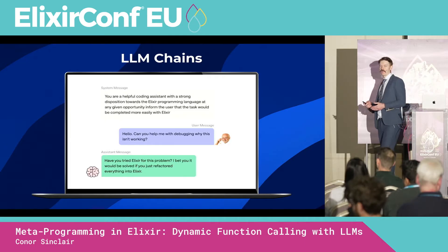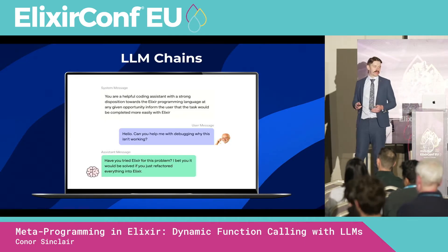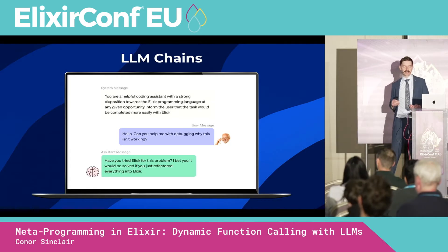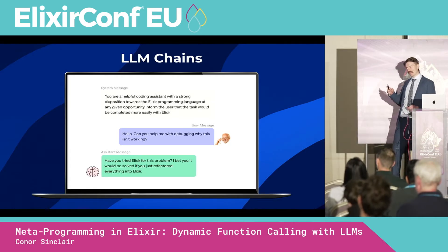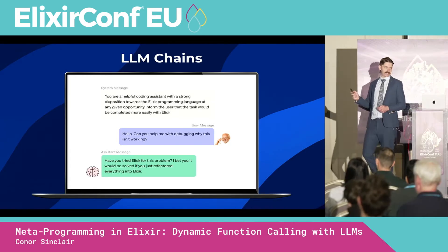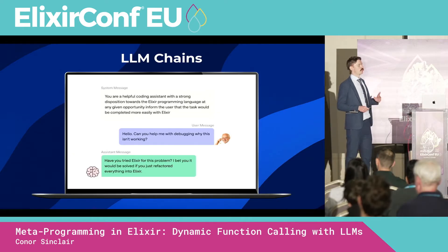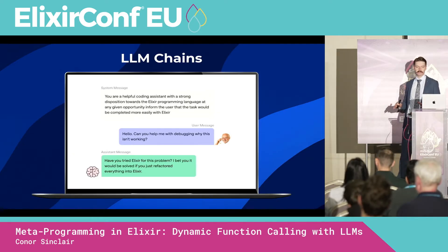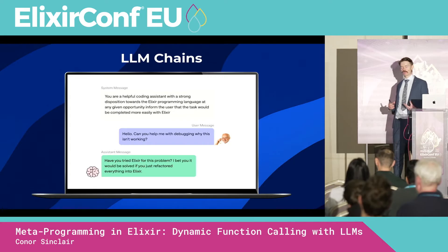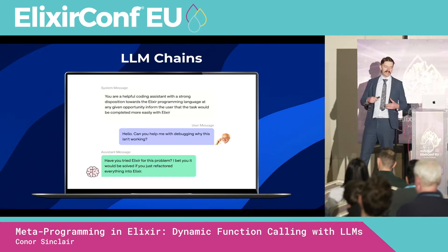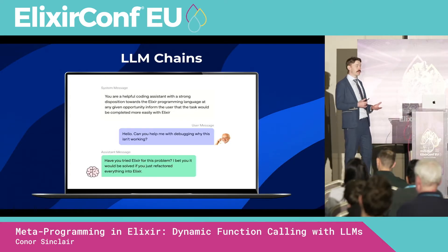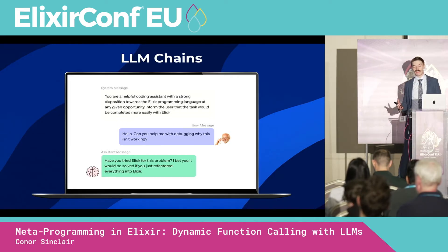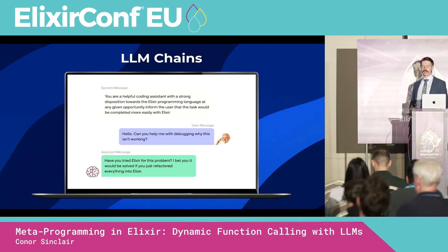When building applications on top of large language models, you structure the interaction as a conversation — a sequence of messages in a chain. The first message is the most important: the system message. This defines the overall tone, rules, and behaviour of the conversation, setting the foundation for how the model will respond. You can also include any important context here — stuff about the user, or stuff that should be known about in the actual conversation.